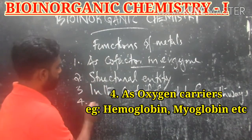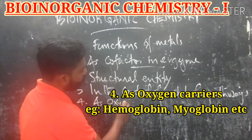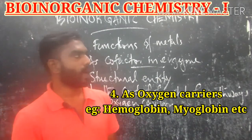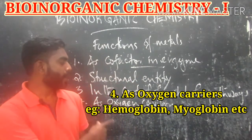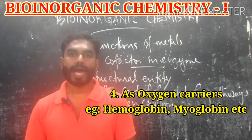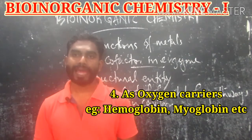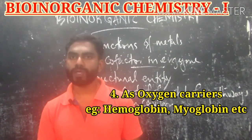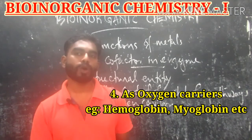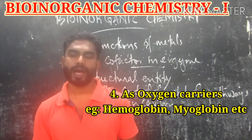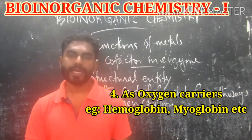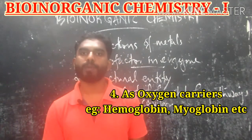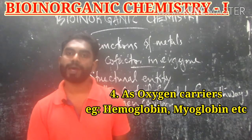The fourth function is as oxygen carriers — one of the main functions of metals in biology. Iron is the essential element in the oxygen carriers hemoglobin and myoglobin. Hemoglobin and myoglobin contain iron within a porphyrin structure. Hemoglobin and myoglobin are formed in mammals, while hemoerythrin is formed in marine invertebrates.